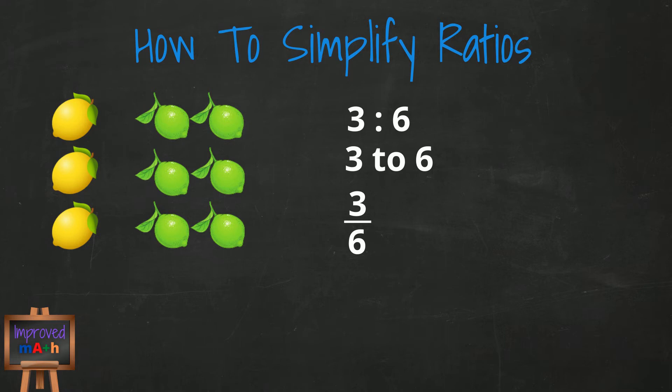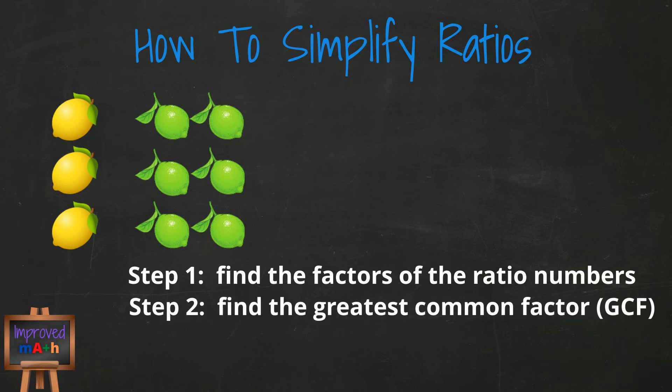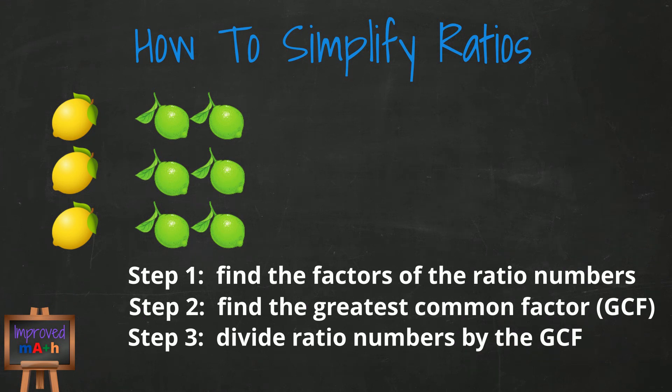Simplifying ratios can be done in three steps. Those steps are Step 1: Find the factors of the numbers in the ratio. Step 2: Find the greatest common factor. Step 3: Divide the numbers in the ratio by the greatest common factor.